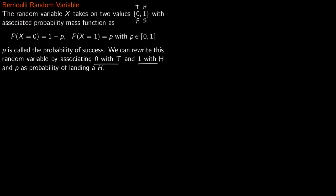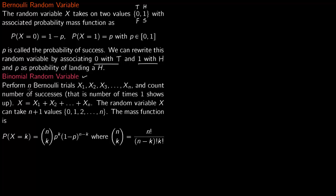Now we talk about binomial random variable. You perform n Bernoulli trials: x1, x2, x3, all the way to xn, each with outcome 0 or 1. Then you count the number of successes, that is the number of times 1 shows up. You simply add all these values to get that count.